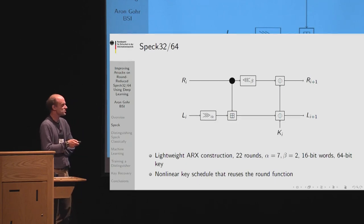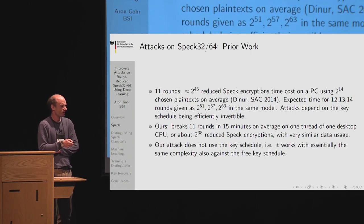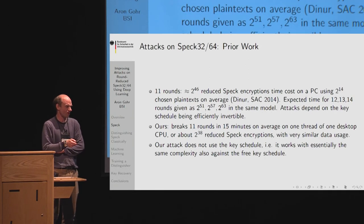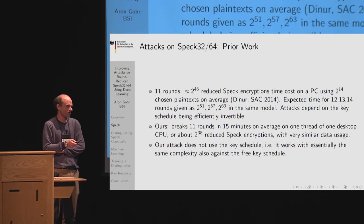SPECK is a family of block ciphers designed by the NSA in 2013. The member we focus on is SPECK 32/64 — the smallest member of the family. It is a lightweight ARX construction with 22 rounds and a nonlinear key schedule that reuses the round function. In prior work, the best attacks on 11-round SPECK used about 2^46 reduced SPECK encryptions and 2^14 chosen plaintexts on average. There are also attacks on 12 to 14 rounds with higher complexity, and all of them depend on the key schedule being efficiently invertible.